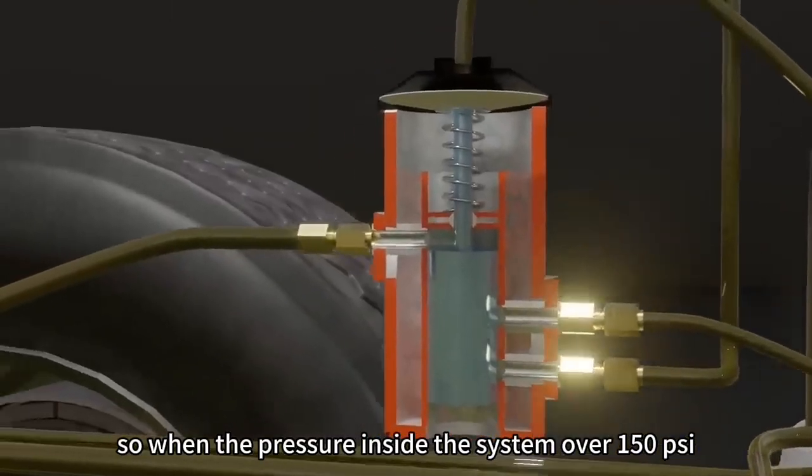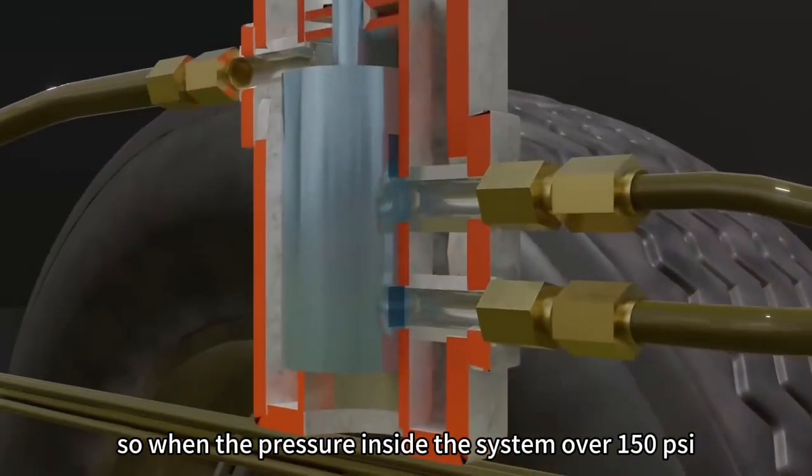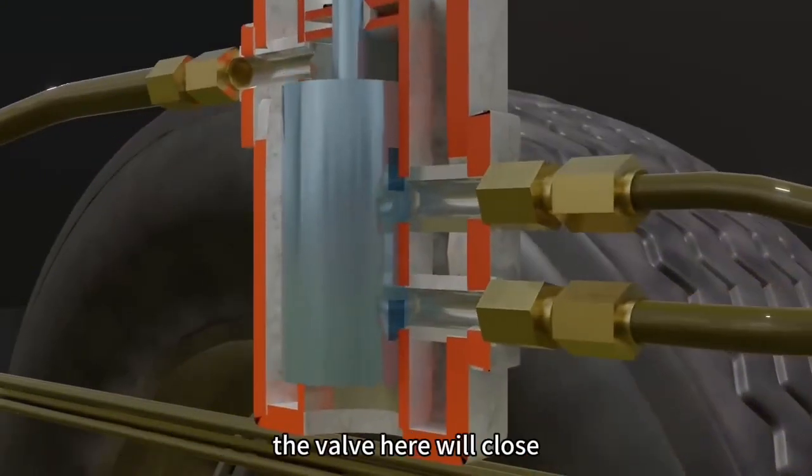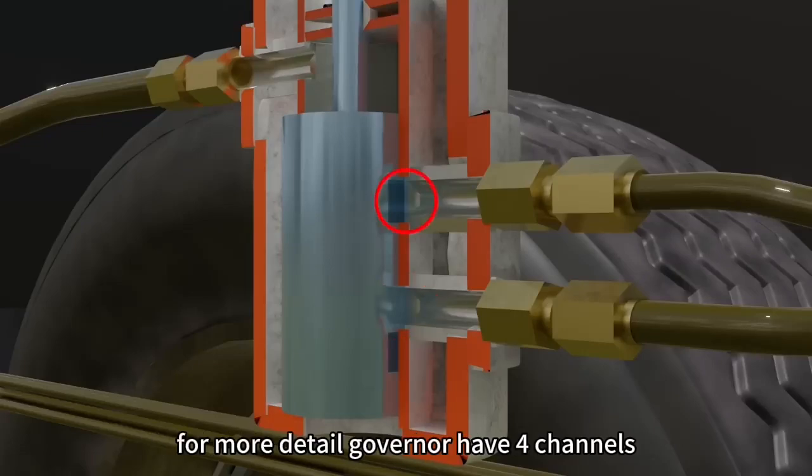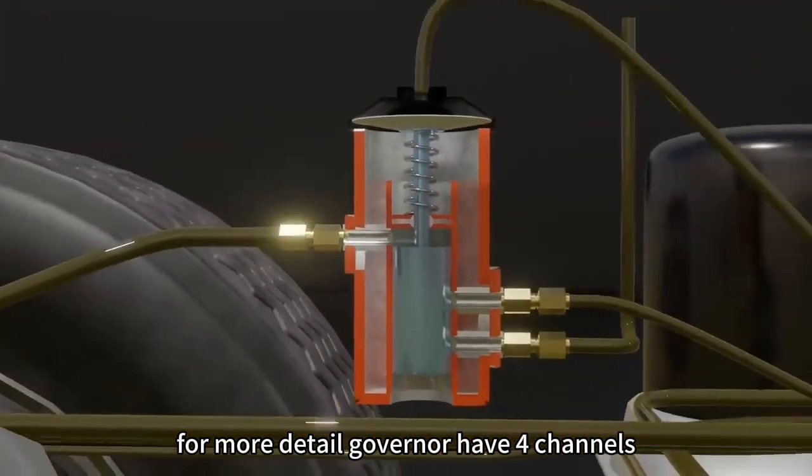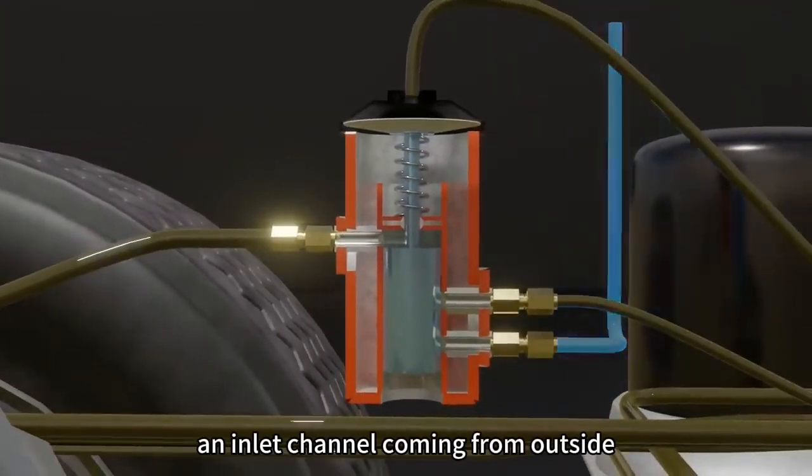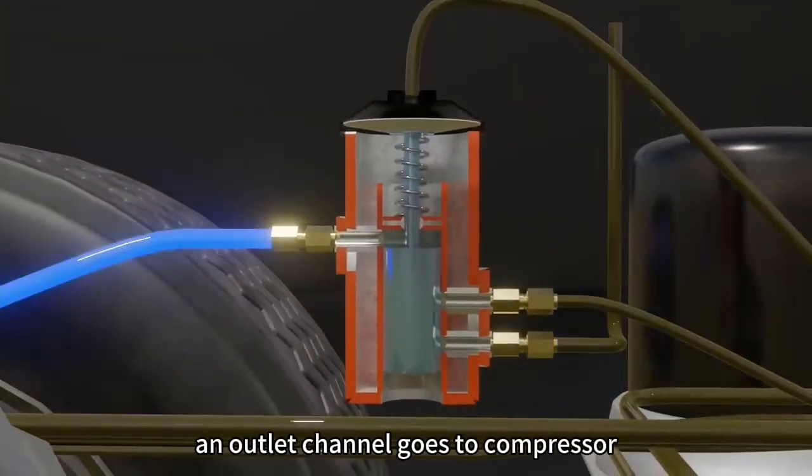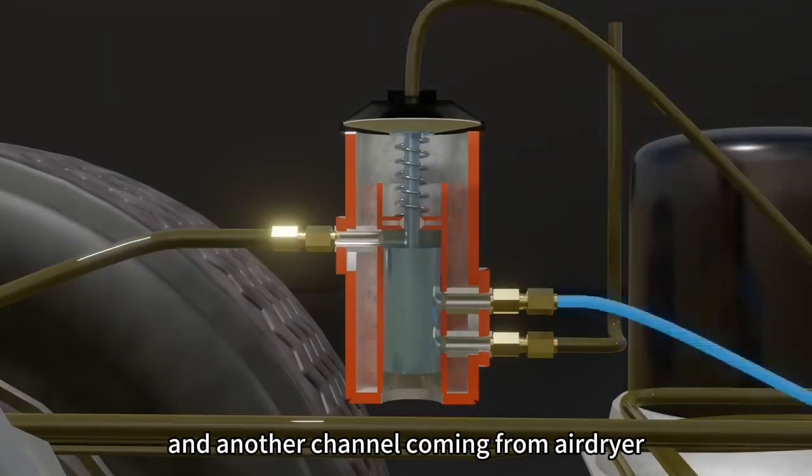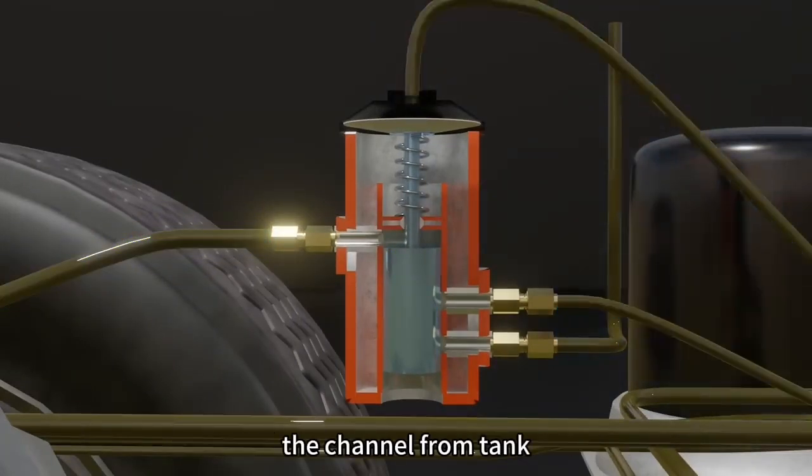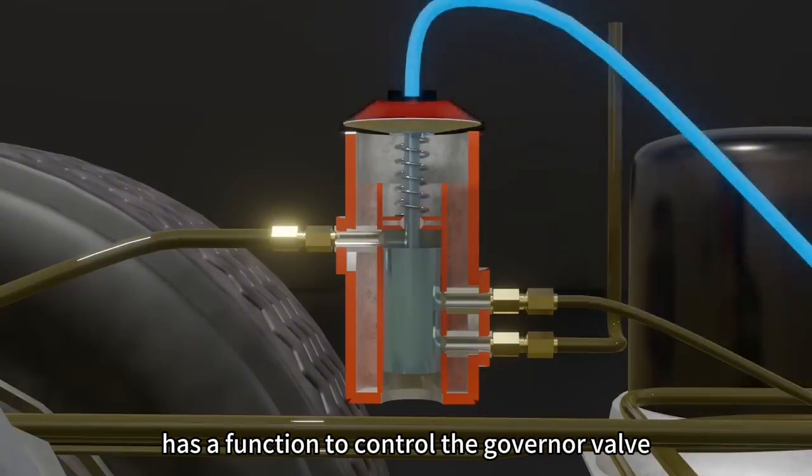When the pressure inside the system is over 150 psi, the valve here will close. It will close the air path from outside, but it will open the air path from the air dryer. Governor has four channels: an inlet channel coming from outside, an outlet channel goes to compressor, a channel to the air tank, and another channel coming from air dryer. The channel for tank has a function to control the governor valve.